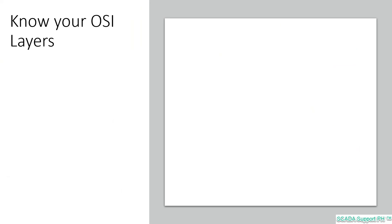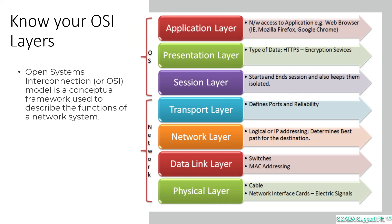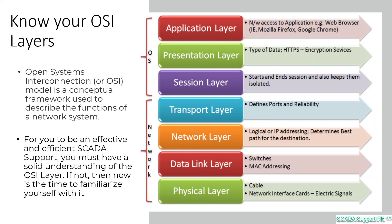Know your OSI layers. The Open Systems Interconnection, or OSI, is a conceptual framework used to describe the functions of a network system — specifically, the seven layers a computer system uses to communicate over a network. It will help you visualize and communicate how a network operates, and helps you isolate and troubleshoot networking problems. For you to be an effective and efficient SCADA or technical support member, you must have a solid understanding of the OSI layer.